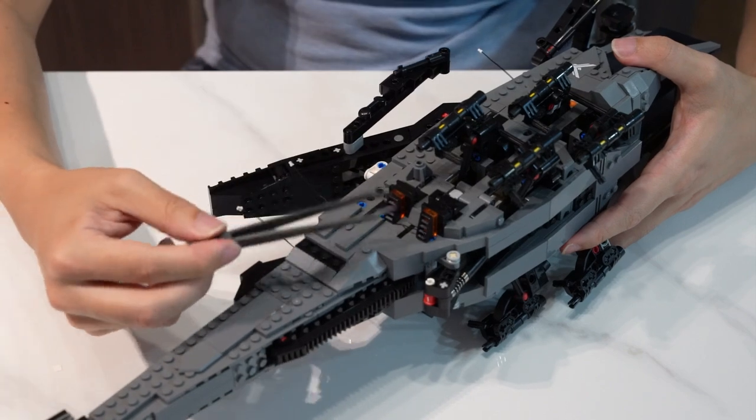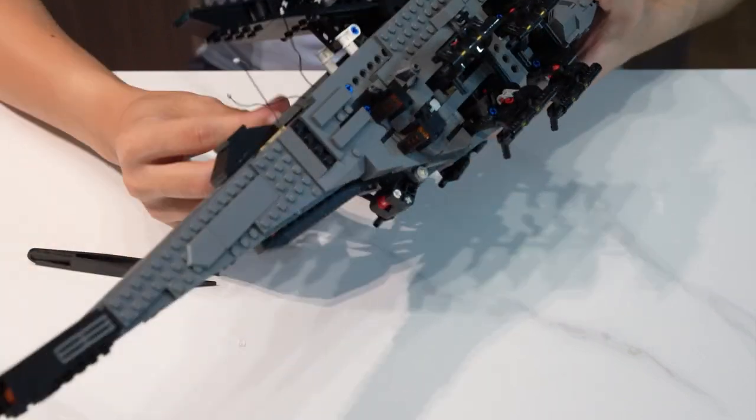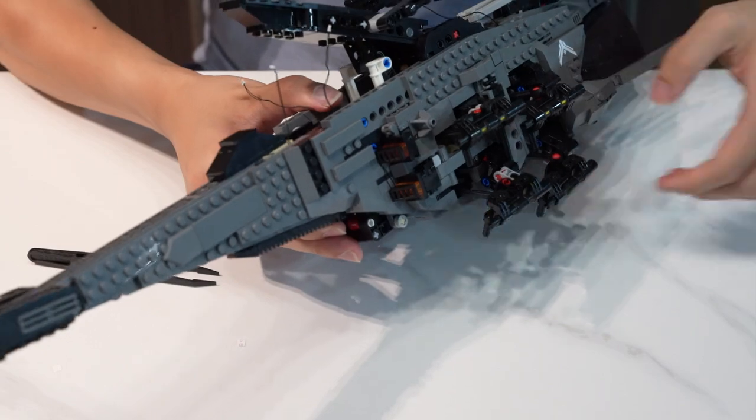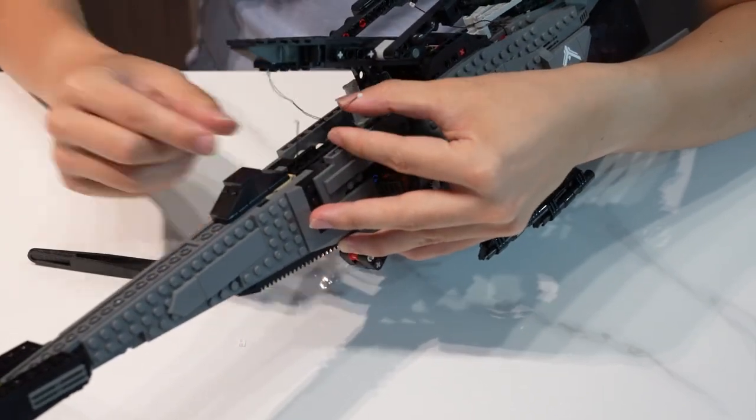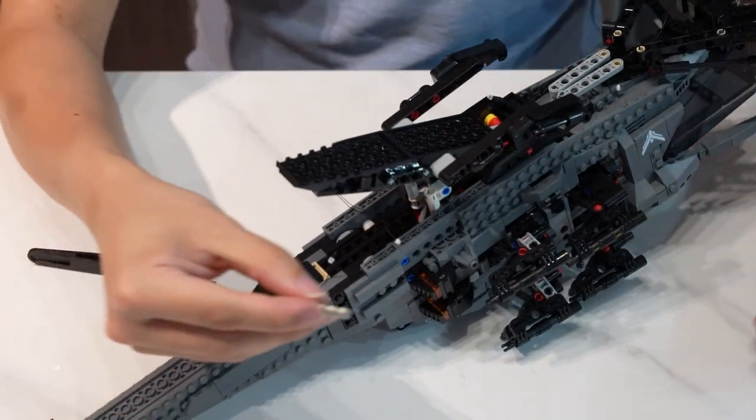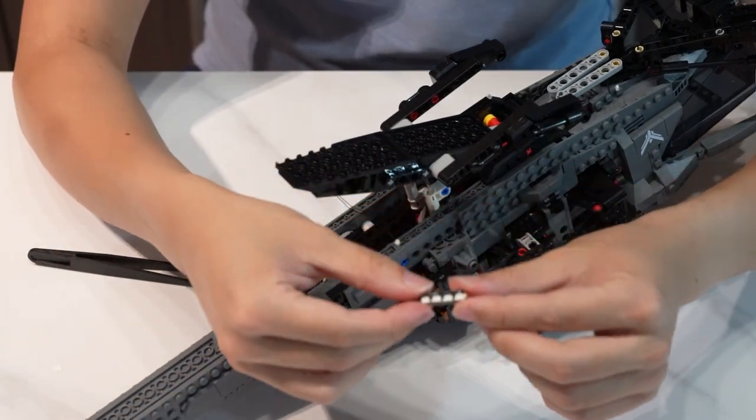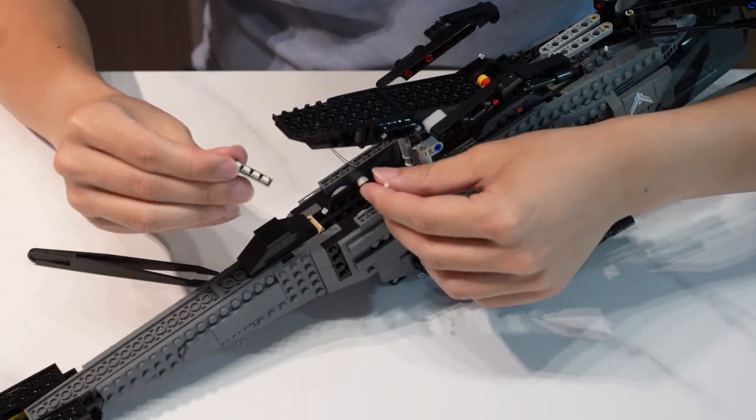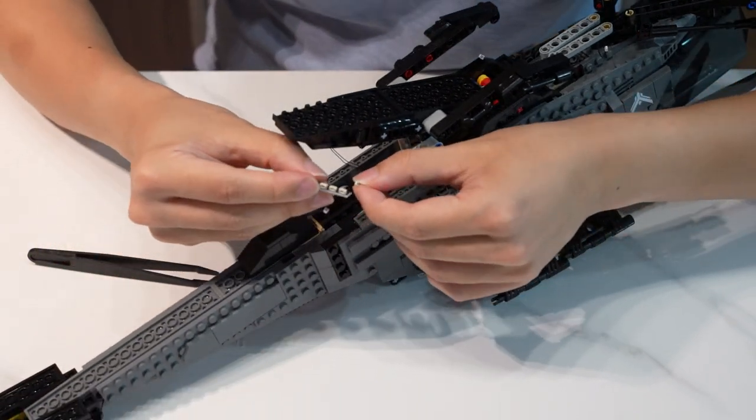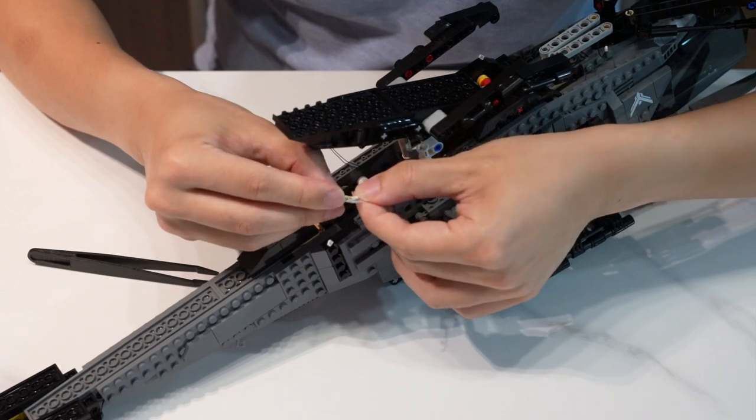So after you have finished with the other side, we have to do some more with the cables here. Bring in the piece that looks like a circuit board from package 3. This one here.